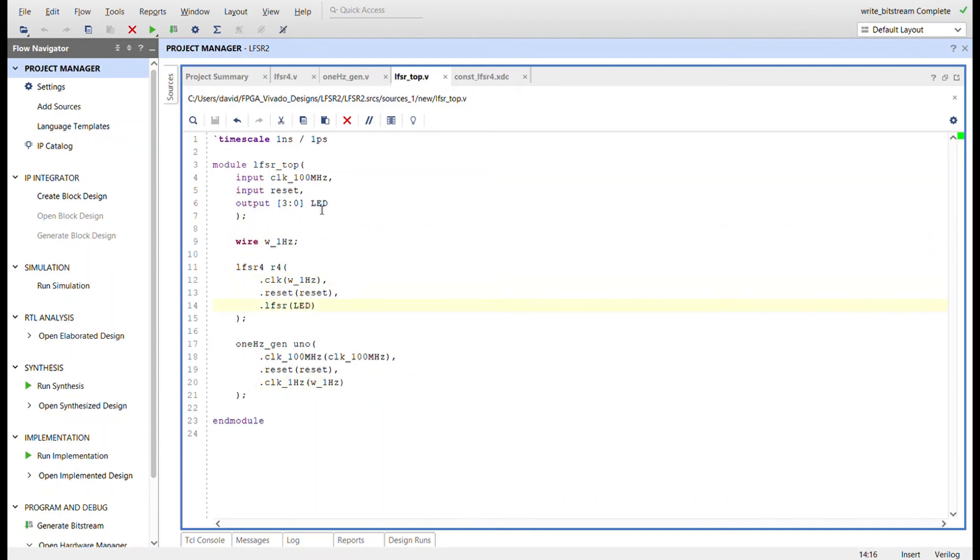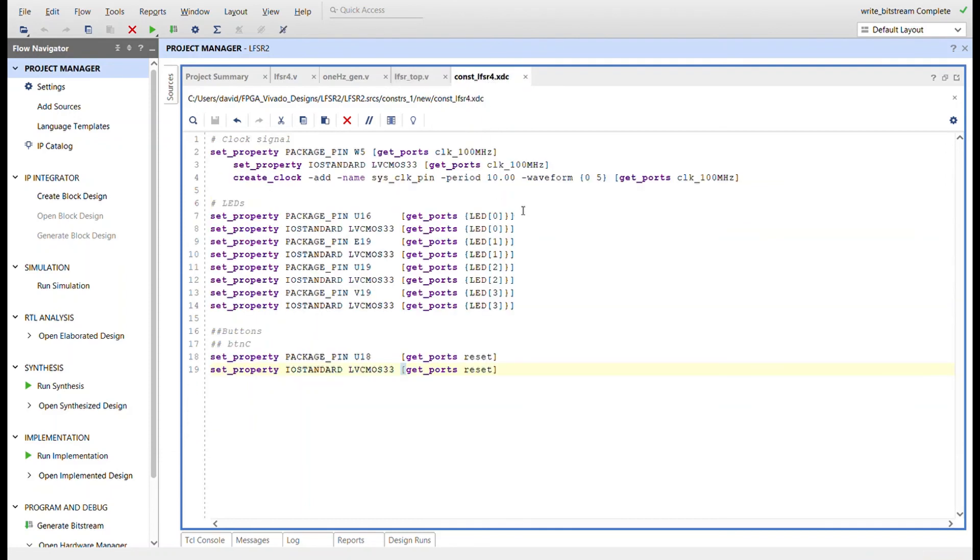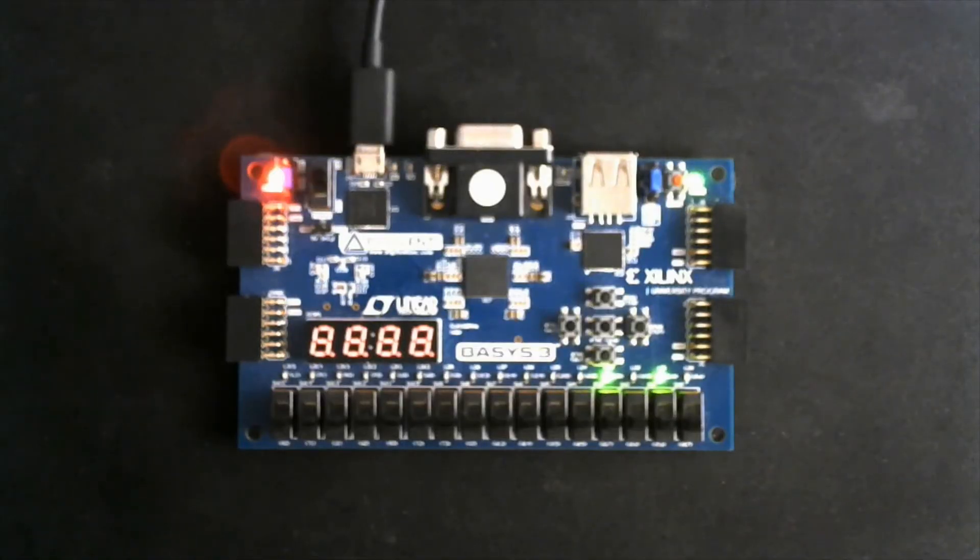Here's the constraints file. Got the 100 megahertz clock, four LEDs, and I'm using button C for the reset. All right, now let me show you it on the board.